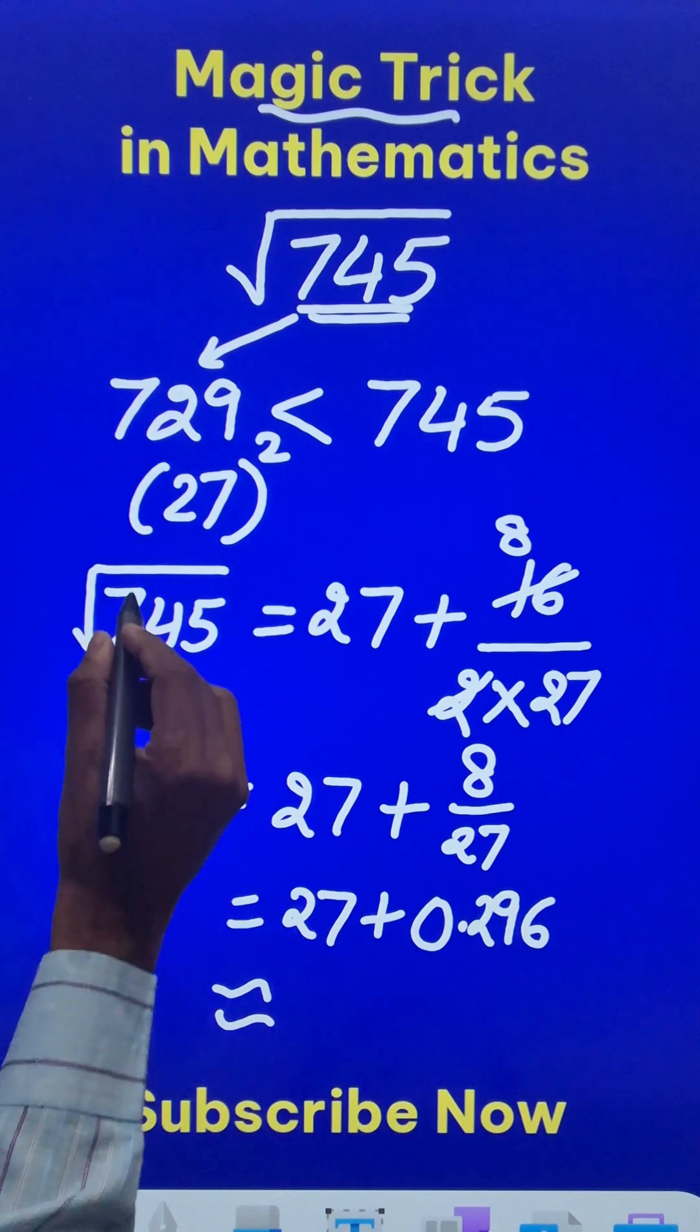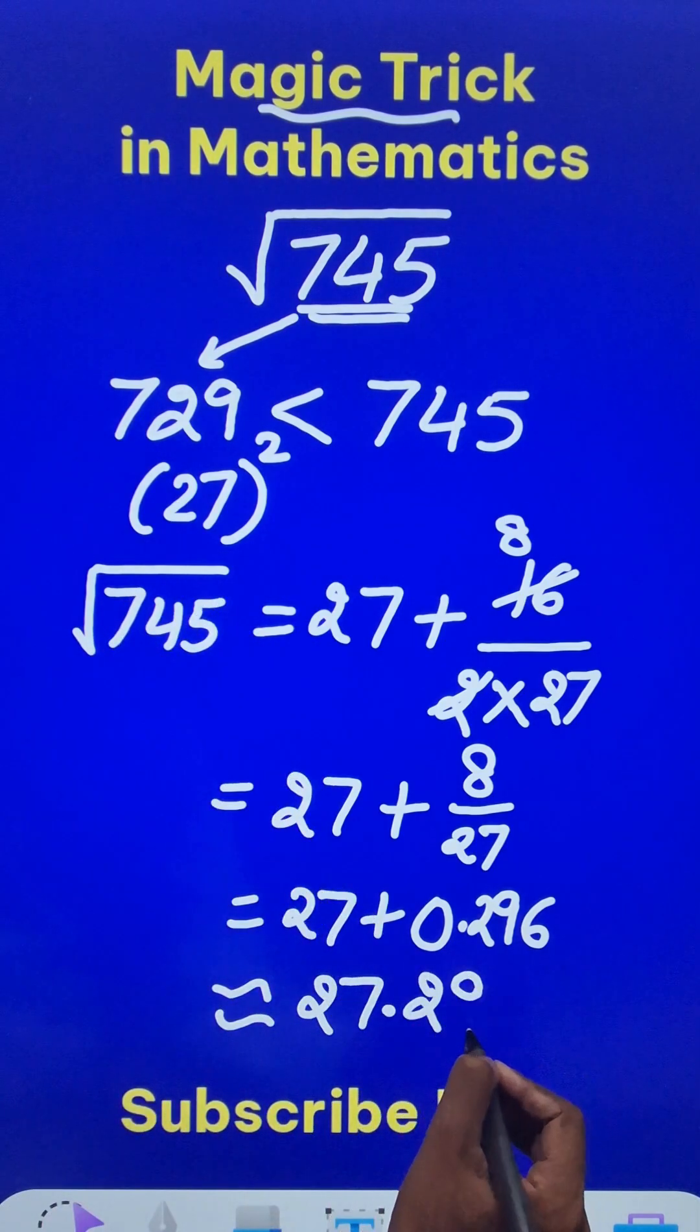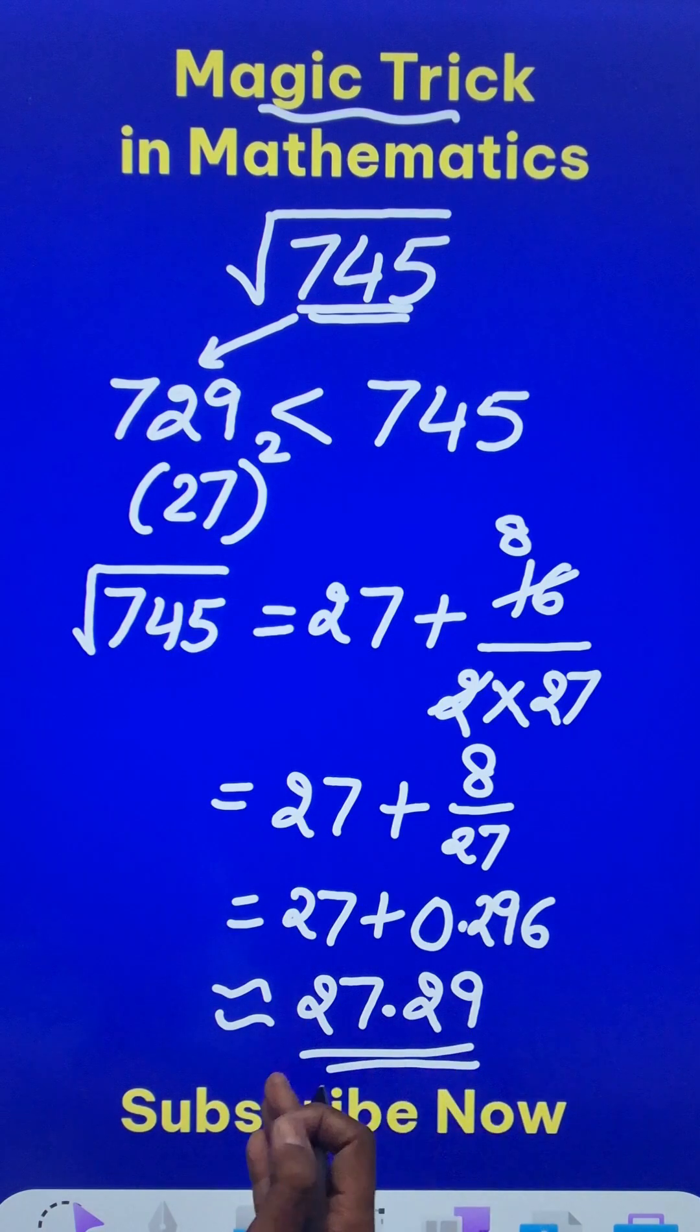So you can check using the calculator: the square root of 745 is 27.29. Maybe the next digit may vary, but the first four digits are correct.